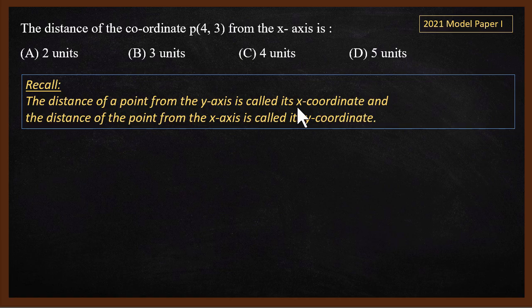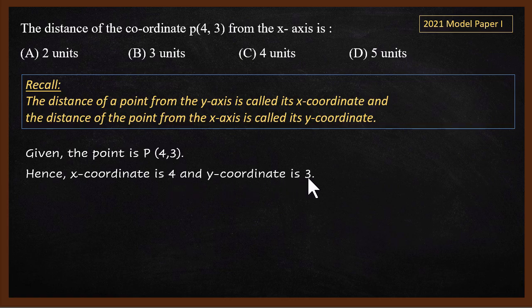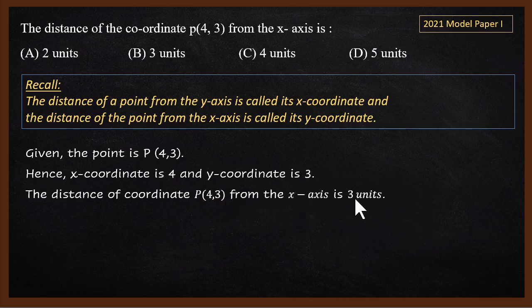Whatever is the distance from the y-axis, we call that the x-coordinate. Similarly, the distance of the point from the x-axis is called the y-coordinate. So the distance from the y-axis is 4 units, and the distance from the x-axis is 3 units — the y-coordinate. The correct answer is 3.